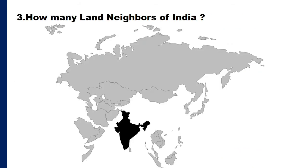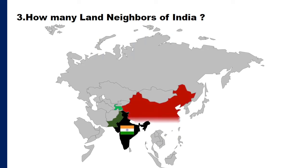Question number 3: how many land neighbors does India have? India has seven land neighbors. India also has two water neighbors — Sri Lanka in the southeast and Maldives in the southwest. Let me discuss these so you can understand easily. The seven land neighbors are: Pakistan, Afghanistan, China, Nepal, Bhutan, Myanmar, and Bangladesh. The border between India and Pakistan is called the Radcliffe Line. The border between India and China is called the McMahon Line.